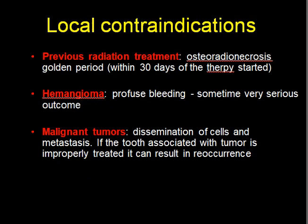Now, coming to local contraindications. The first local contraindication is previous radiation treatment. For head and neck malignancy radiation, one should avoid extraction for at least one year as it can lead to osteoradionecrosis. There is a golden period — within 30 days of the start of therapy — during which emergency dental extraction can be performed, but not after that.